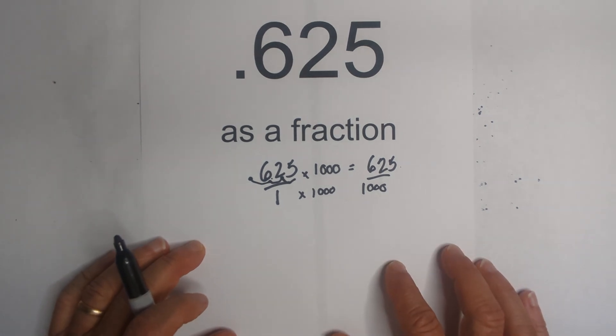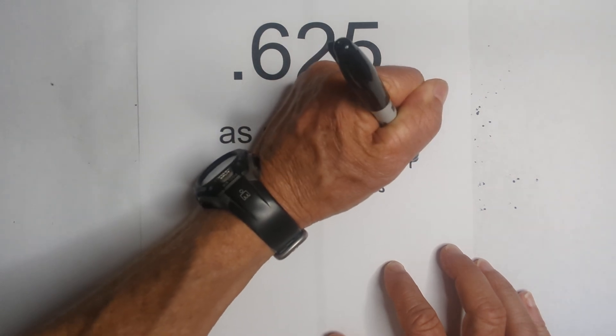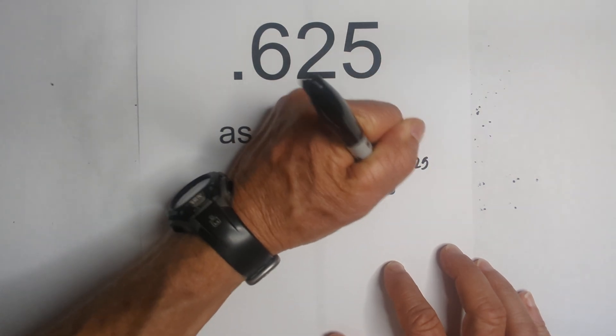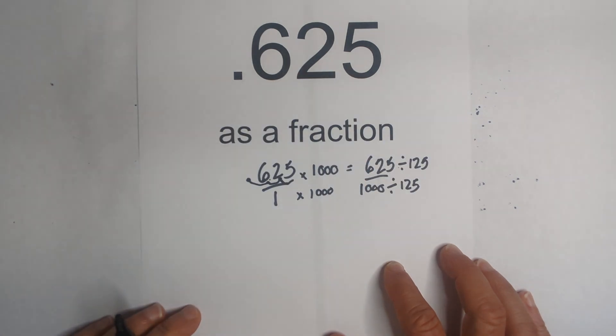I now need to reduce this, and so I can divide it by its greatest common factor, which I know is 125. So I'll divide 625 by 125, which is the GCF.